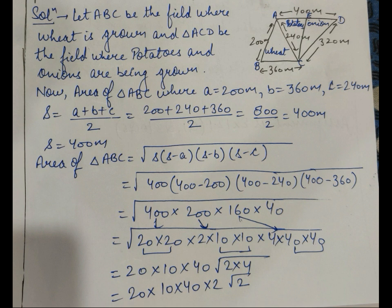Now, as we have S, we can find the area of triangle ABC. The formula is root of S into S minus A into S minus B into S minus C. We put the values of S, A, B, and C in the formula. After putting the values, we get 400 into 200 into 160 into 40 under the root.